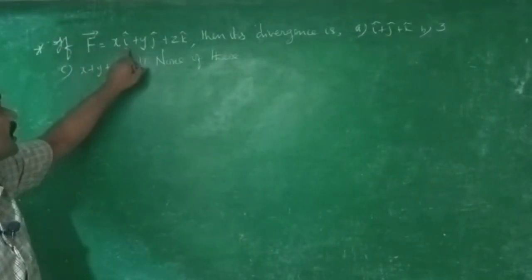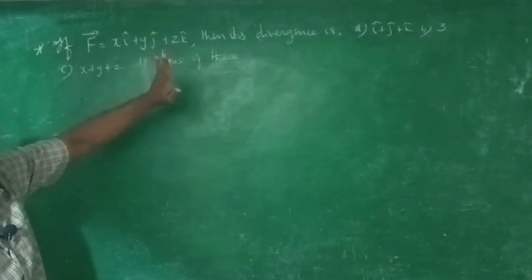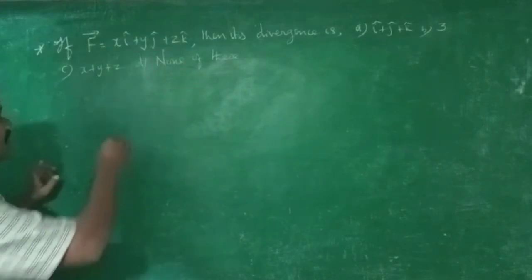So if F equals x i-cap plus y j-cap plus z k-cap, then its divergence is...